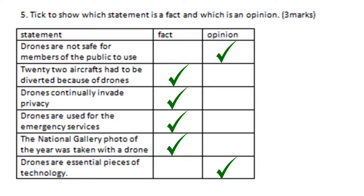Number five is worth three marks. You had six questions, so if you get all six correct you get three marks; if you got four correct you get two marks; and if you only got two correct you get one mark. Mark those on the screen now — fact or opinion.